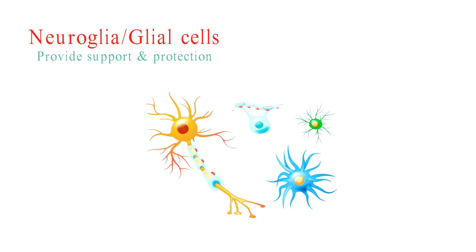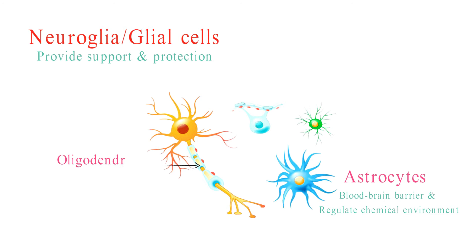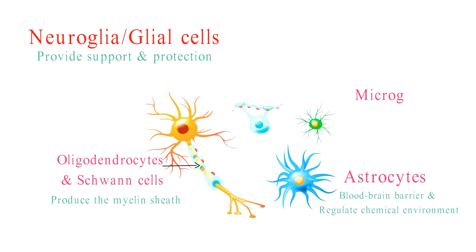Neuroglia, or glial cells, are the unsung heroes of the nervous system. They provide support and protection to neurons. Types of glial cells include astrocytes, which maintain the blood-brain barrier and regulate the chemical environment around neurons, and oligodendrocytes and Schwann cells, which produce the myelin sheath. Microglia are the immune cells of the central nervous system, while ependymal cells help produce cerebrospinal fluid.